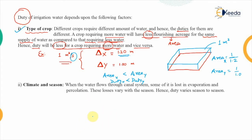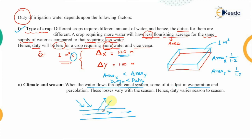The second factor is climate and season. The water flowing through the canal system is exposed to atmospheric conditions. During transmission, some water is lost to evaporation because the canal is continuously exposed to sun rays and heat, so some water is lost in the form of water vapors. Some water also percolates into the ground due to seepage — that process is known as percolation. These are the transmission losses. When the summer season is present, there will be higher temperature compared to winter, so these losses will be higher in summer.